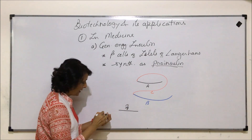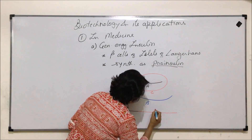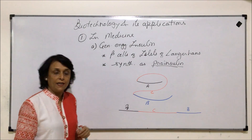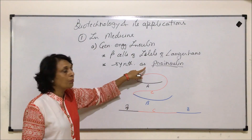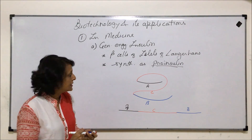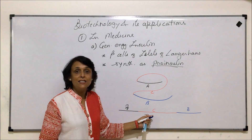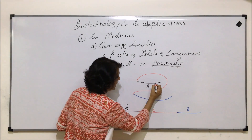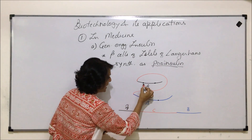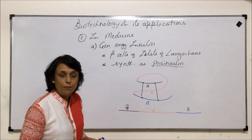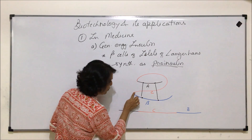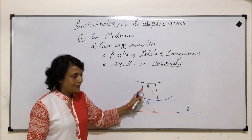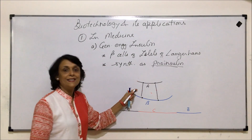There is the A polypeptide, then connecting to B is the C polypeptide, which is also known as the linker polypeptide, and then there is the B chain. So there are three polypeptide chains in pro-insulin. The job of the C chain or linker chain is to bring A and B closer so that disulfide bonds can be formed between the sulfur-containing amino acids of A and B. Once the disulfide bonds are formed, the role of the C linker polypeptide chain is complete and the C chain is removed, giving us active insulin.